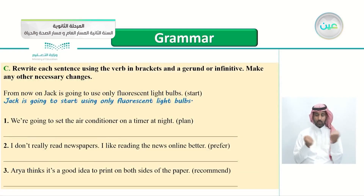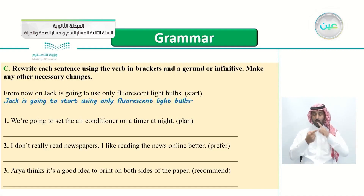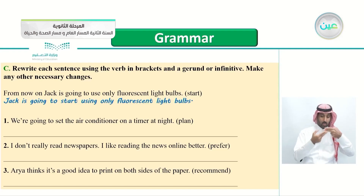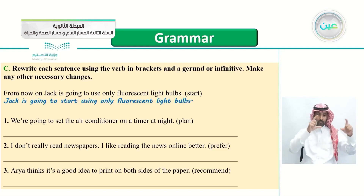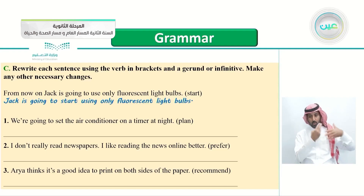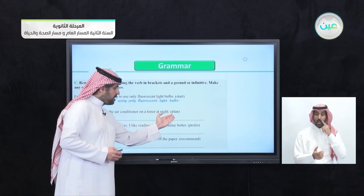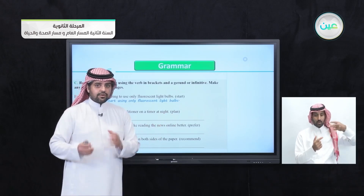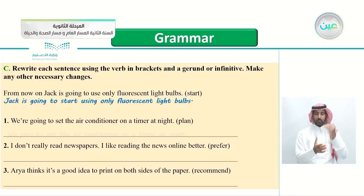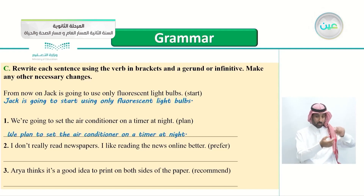Exercise C: rewrite each sentence using the verbs in brackets with a gerund or infinitive. Example: 'From now on, Jack is going to use only fluorescent light bulbs' — rewritten with 'start': 'Jack is going to start using only fluorescent light bulbs.' Number 1: 'We are going to set the air conditioner on a timer at night' — rewritten with 'plan': 'We plan to set the air conditioner on a timer at night.'